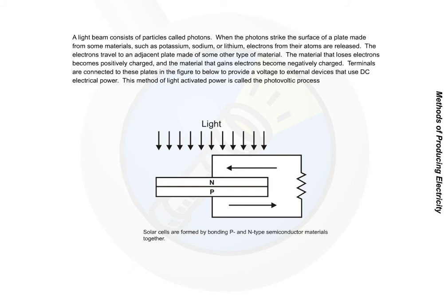The material that loses electrons becomes positively charged, and the material that gains electrons becomes negatively charged. Terminals are connected to these plates, as shown here, to provide a voltage to external devices that use DC electrical power. This method of light-activated power is called the photovoltaic process.